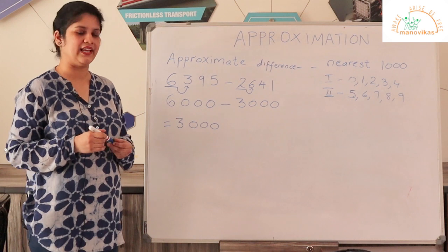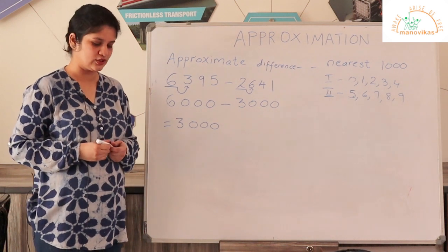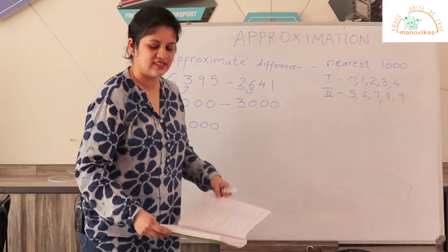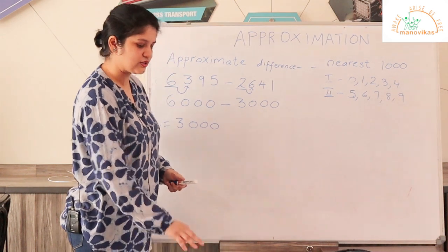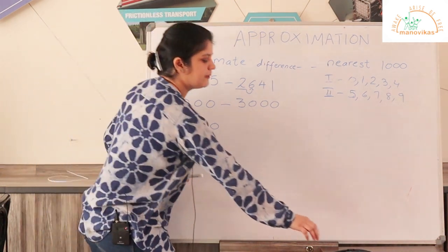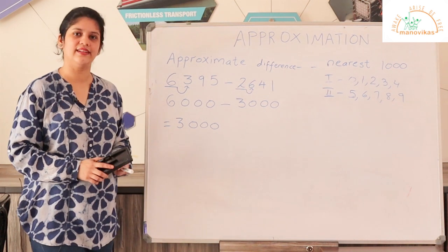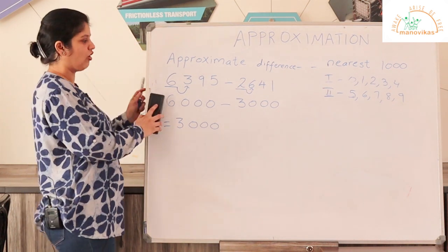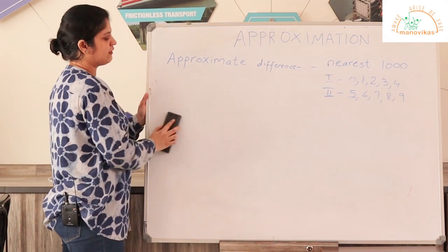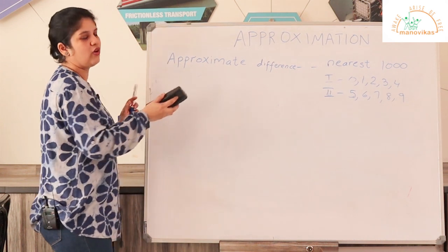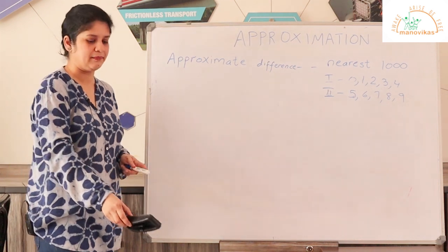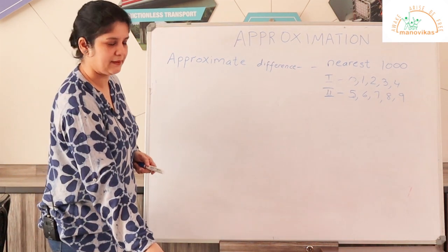So in the same manner, you all can solve questions 7, 8, and 9, where you are asked to find the approximate difference of two numbers by rounding up to the nearest tens, hundreds, or thousands. Sometimes in place of approximate you may also come across the word estimate — approximate and estimate mean the same thing.